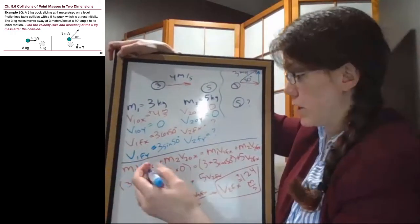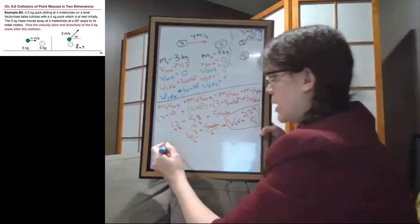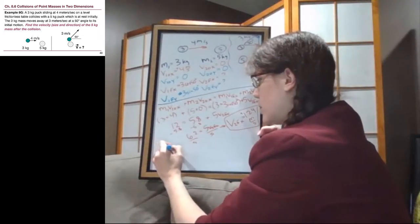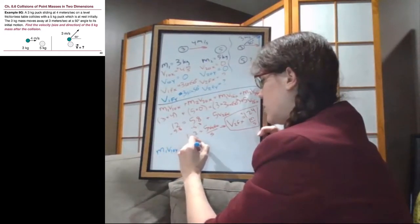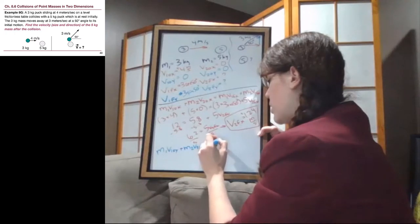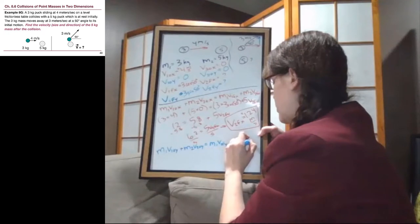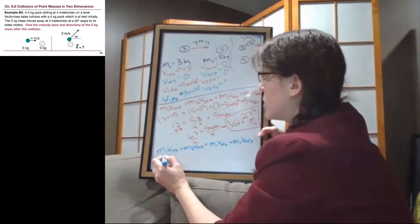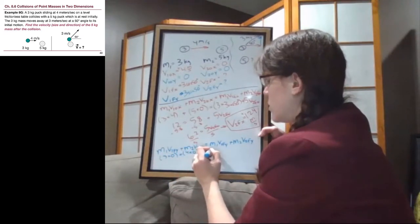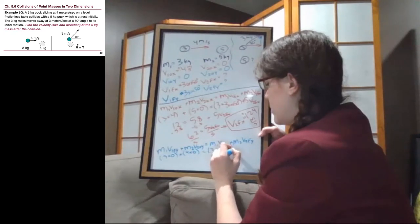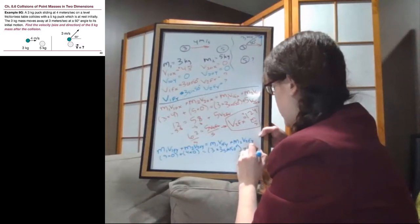Okay, now we look at the y direction. A little bit short on space, but we'll make it work. So m1v1 initial in the y direction, plus m2v2 initial in the y direction, equals m1v1 final in the y direction, plus m2v2 final in the y direction. So this is 3 times zero, plus 4 times zero, equals 3 times 3 sine 50 degrees, plus 5v2fy.